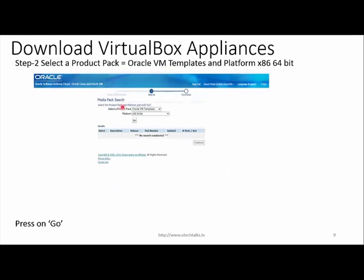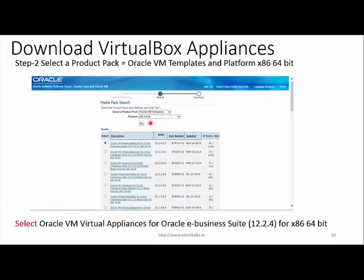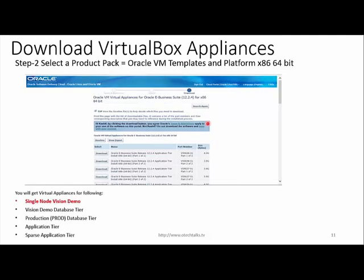To download the virtual appliance, select the virtual product as Oracle VM Template and the platform as x86-64 bit, then click Go. You will get the Oracle VM Virtual Appliance for Oracle E-Business Suite release 12.2.4. Clicking next, you'll find different virtual appliances available: single node Vision demo, Vision demo database tier, production application tier, and sparse application tier. I'm going to use the single node Vision demo.